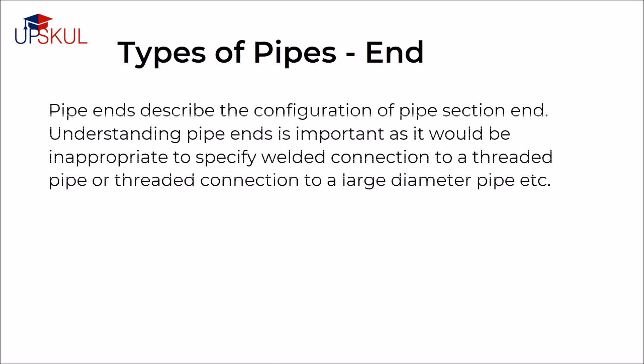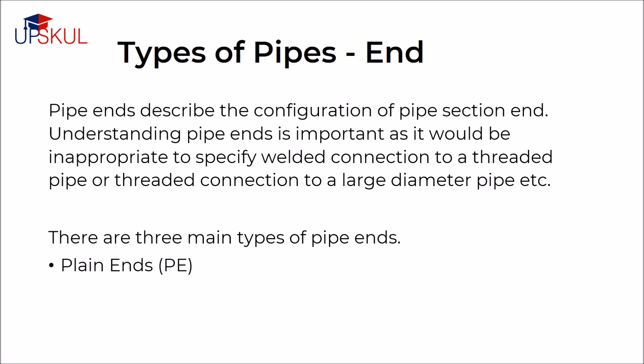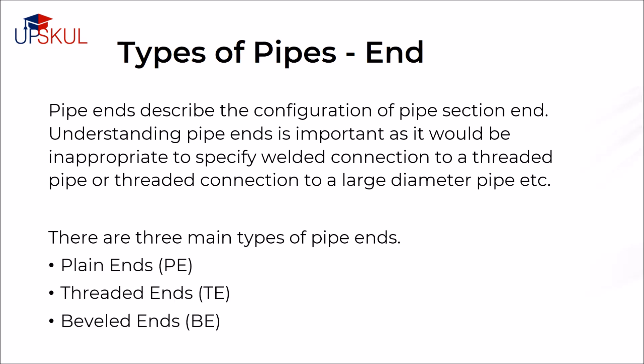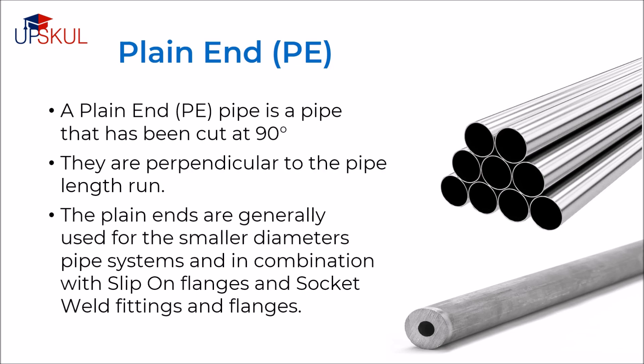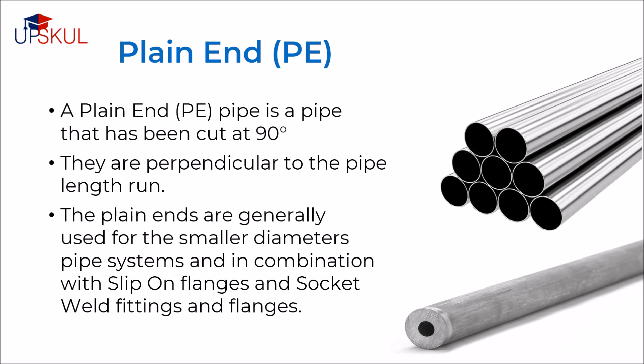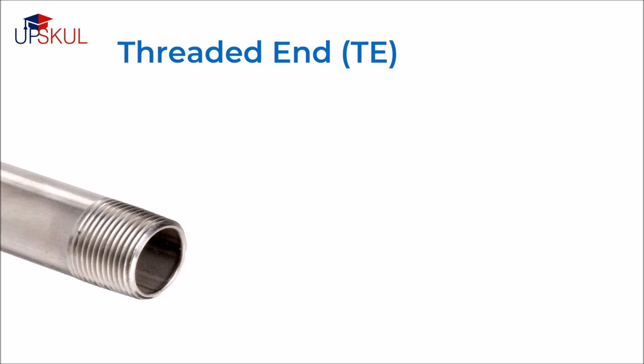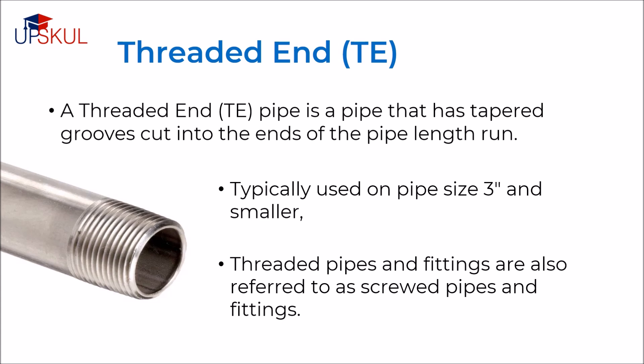The last classification of pipe is based on the pipe ends. Pipe ends describe the configuration of a pipe section end. Understanding pipe ends is important as it would be very inappropriate to specify a welded connection to a threaded pipe or a threaded connection to a large diameter pipe. There are three main types of pipe ends: plain ends, threaded ends, and bevel ends. A plain end is a pipe that has been cut at 90 degrees perpendicular to the pipe length. Plain ends are generally used for smaller diameter pipe systems in combination with slip-on flanges and socket weld fittings and flanges. A threaded end pipe is a pipe that has tapered grooves cut in the ends of the pipe, typically used for pipe sizes that are 3 inches or smaller.